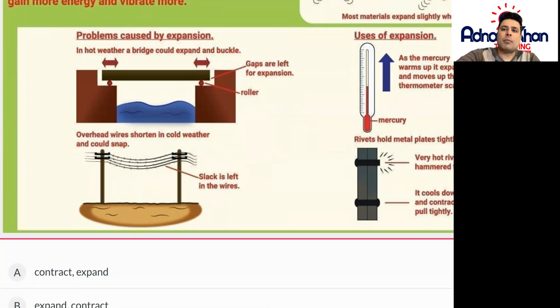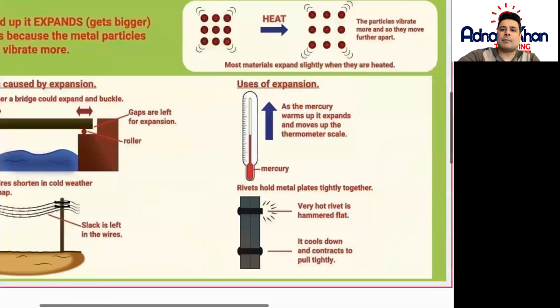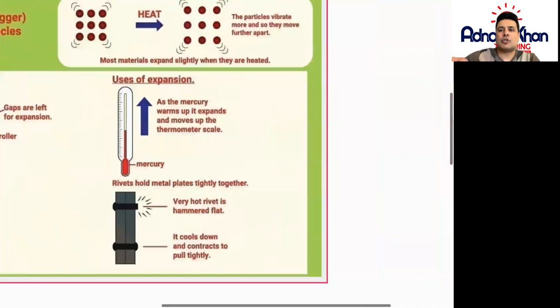These are some of the problems caused by expansion and shrinkage. What are the uses of expansion? As the mercury warms up, the temperature expands and moves up the thermometer scale. This is mercury in this thermometer and as it warms up the mercury expands. In other words it increases up and this gives us the correct temperature.